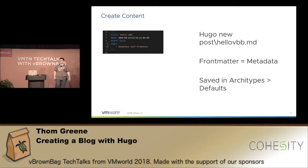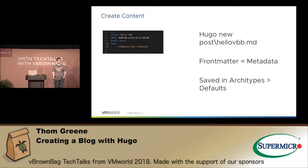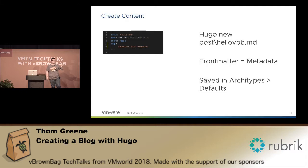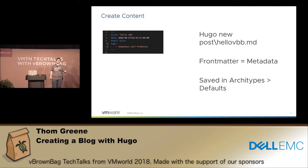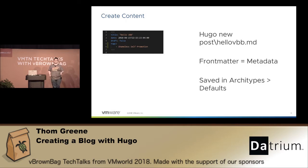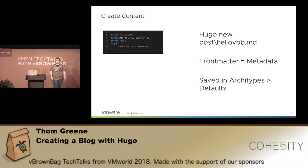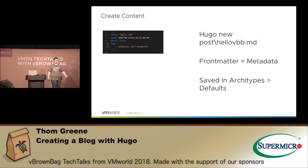Then you create the content. For the example at vbbhugo.github.io, I did `hugo new post hello-vbb.md`. That created the front matter — a header on the Markdown file that lets you set the title, the date, whether it's a draft, and what categories and tags you're using. There's a default that tells you what it generates, and you can edit that default or create sub-modules. Anything in the posts folder automatically gets added into your top navigation bar. The defaults are saved in the archetypes folder, which is generated when you type `hugo new site`.